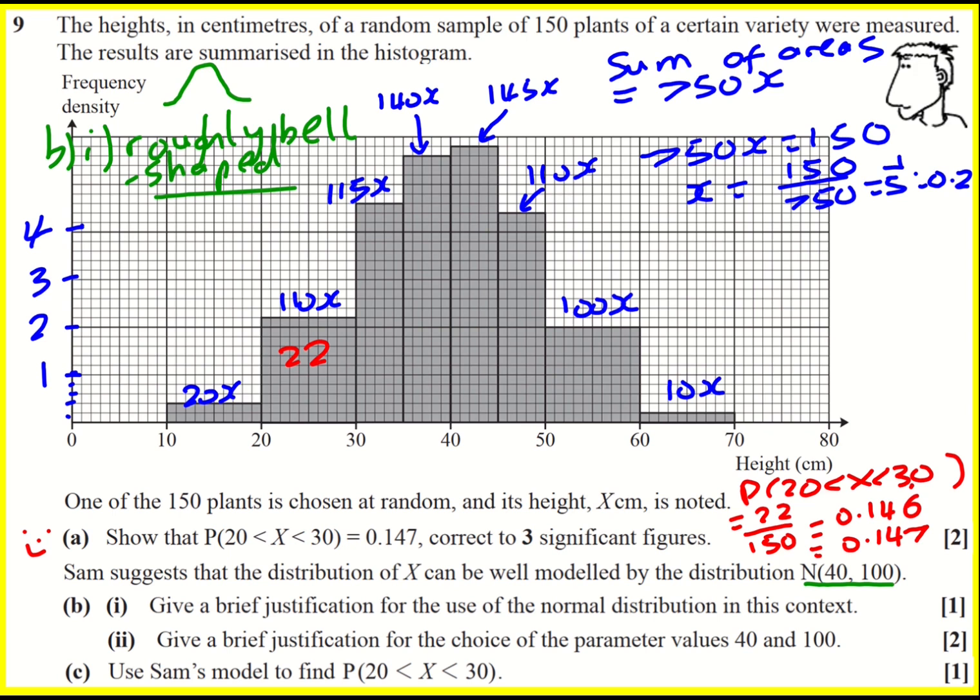Give a brief justification for the choice of the parameters. Well, the distribution is symmetrical about 40. Pretty much. Well, roughly symmetrical I suppose I could say. So mu is going to be approximately 40. I wish I'd said the word roughly symmetrical now. So just imagine I'd written that.